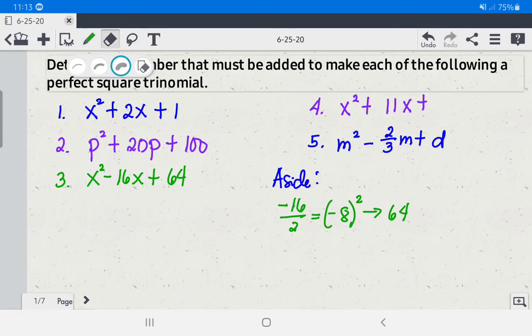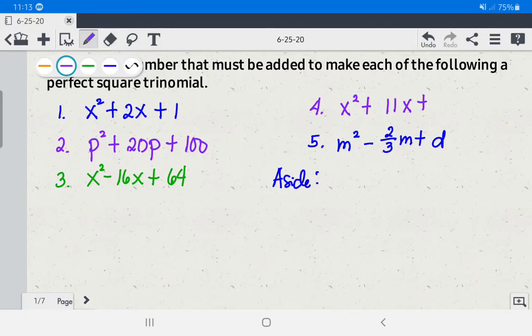Next is number 4. We have x squared plus 11x plus unknown. We're going to get the numerical coefficient of the middle term. We have 11. You divide it by 2, so that is 11 over 2. Then square it. The answer is 11 squared is 121, and 2 squared is 4, so 121 over 4. The perfect square trinomial for number 4 is x squared plus 11x plus 121 over 4.